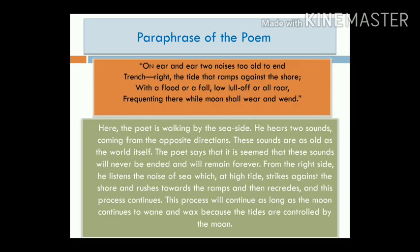In the beginning lines of this poem, the poet is walking by the seaside. He hears sounds coming from opposite directions. These sounds are as old as the world itself. The poet says that these sounds seem as though they will never end and will remain forever. From the right side, he listens to the noise of the sea which at high tide strikes against the shore and rushes towards the ramps and then retreats. This process will continue as long as the moon continues to wane and wax, because the tides are controlled by the moon.